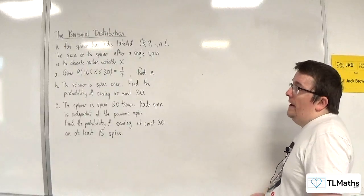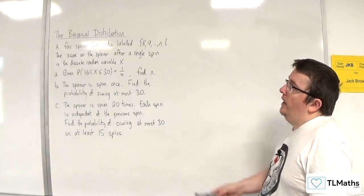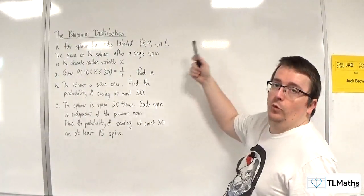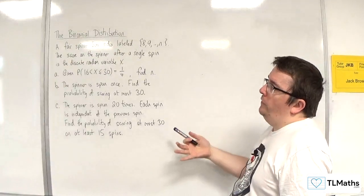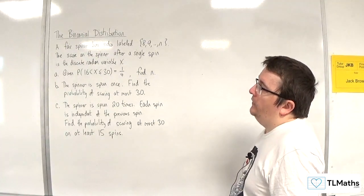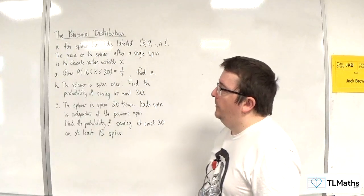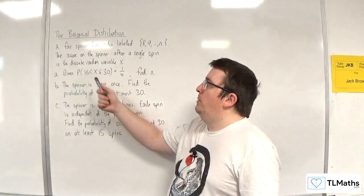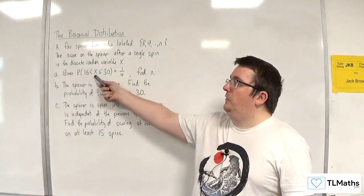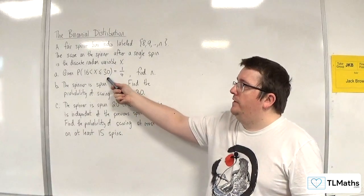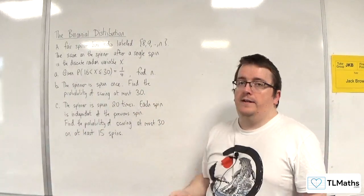So in this problem, we've got a fair spinner with sides labeled 8, 9, 10, 11, 12, all the way up to n. The score on the spinner after a single spin is the discrete random variable x. Part A: given that the probability of x being greater than 16 but less than or equal to 30 is 1 quarter, find n.